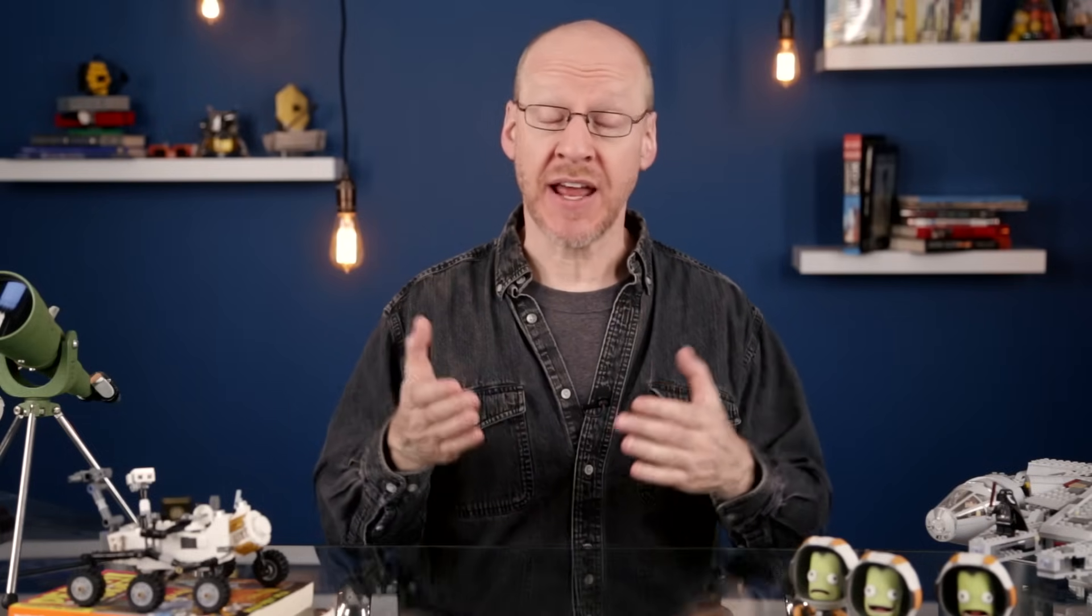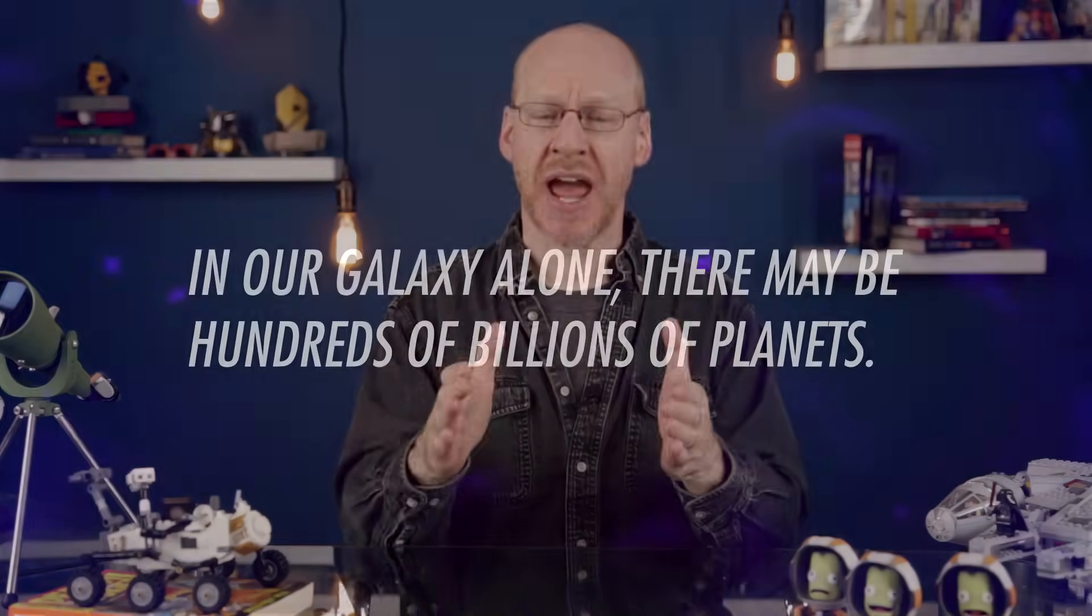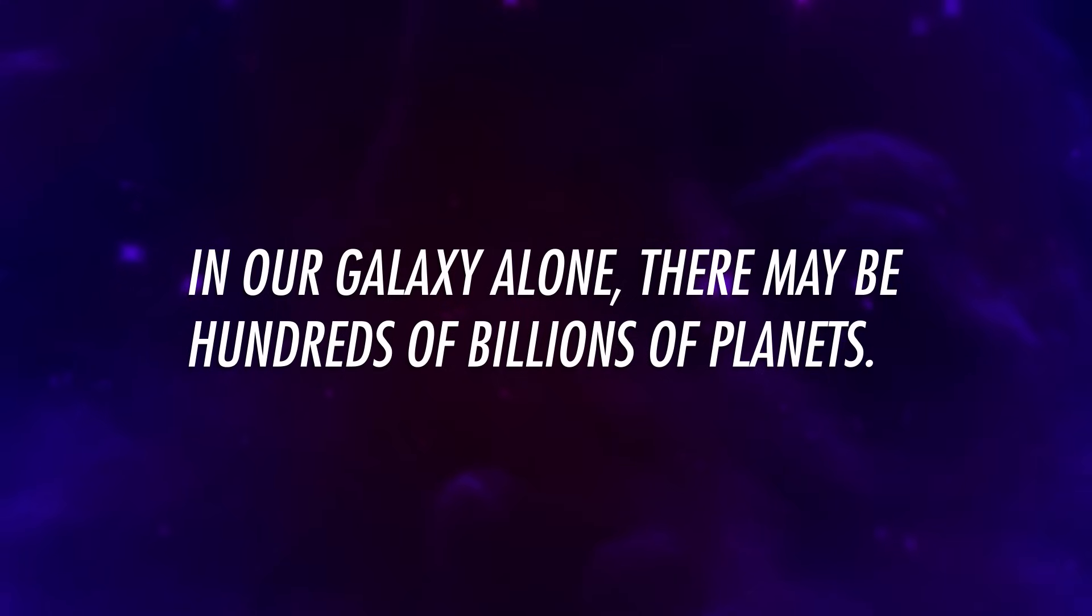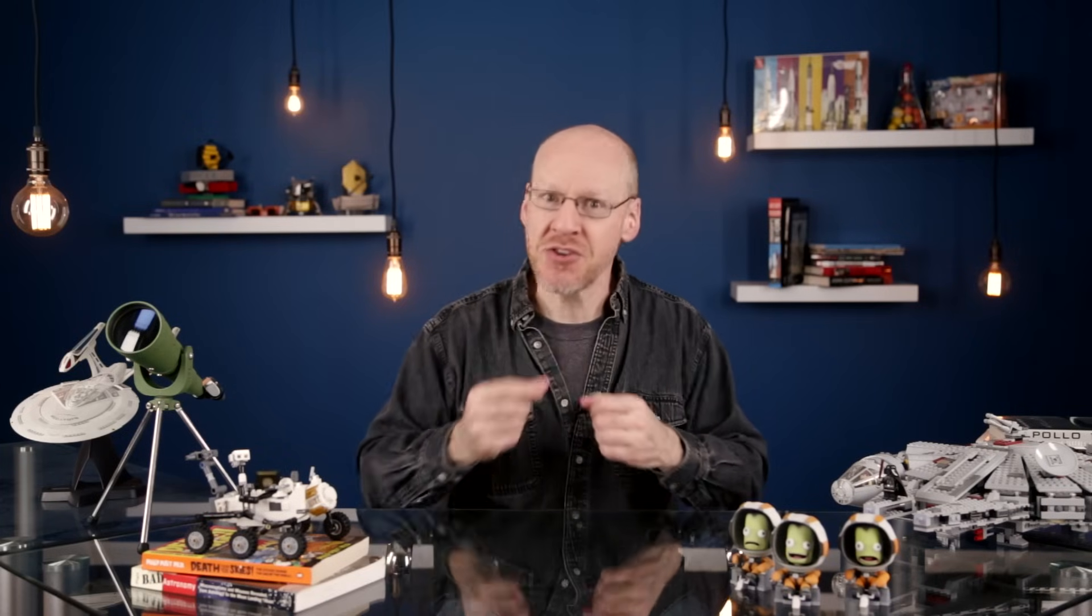We've seen so many exoplanets now that we can extrapolate a bit and get some numbers. The results are staggering. In our galaxy alone, there may be hundreds of billions of planets. In fact, planets may outnumber stars in the sky. Now, if we've seen planets as big as Jupiter and as small as Mercury, then we must have seen planets around the same size as Earth, right? Yes. Yes, we have. We've actually found hundreds of them so far. It looks like making planets the same size as ours is pretty easy for stars to do.